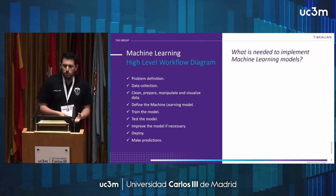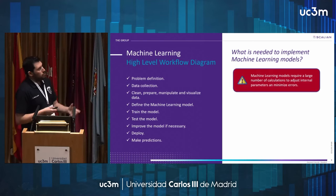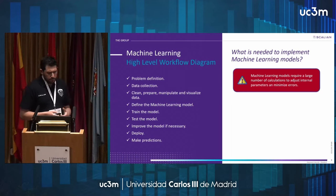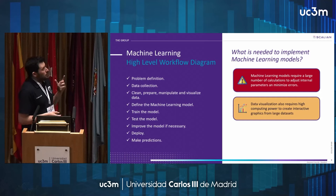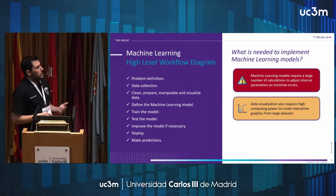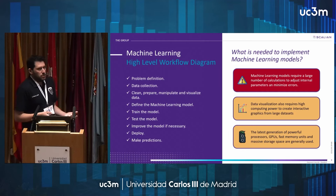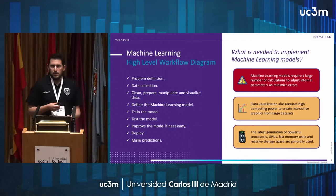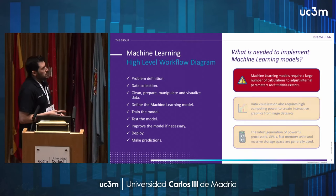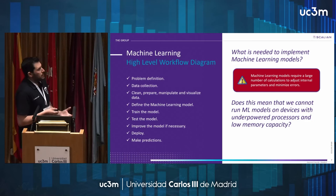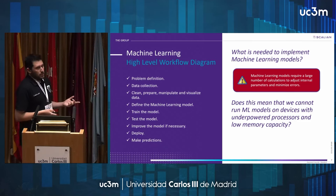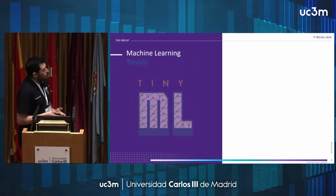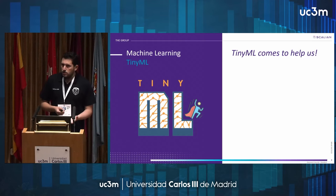The question is: what is needed to implement machine learning models? Machine learning requires a large number of calculations to adjust internal parameters and minimize errors. Data visualization also requires high computing power to create interactive graphics from large datasets. So the latest-generation processors, GPUs, fast memory units, and massive storage are generally used. Does this mean we cannot run machine learning models on devices with underpowered processors and low memory capacity? The answer is definitely not.